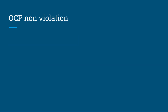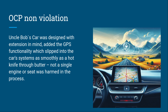In contrast, Uncle Bob's car was designed with extension in mind. He added the GPS functionality and it slipped into the car's system as smoothly as a hot knife through butter — not a single engine or seat was harmed. When you design for extension, you can easily insert another thing or functionality inside your code.